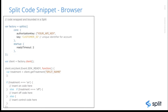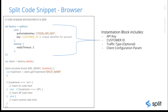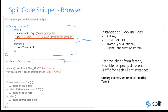Here is a Split code snippet from a browser — this is what the code looks like. In the first section we initialize the API key and specify the customer key, which determines how the treatment is calculated. The ready timeout is set to 2, meaning 2 seconds. We then initialize the client from the factory object, which allows us to subsequently call getTreatment. Since the customer ID is already specified during factory initialization, we don't need to specify it again in the getTreatment call.